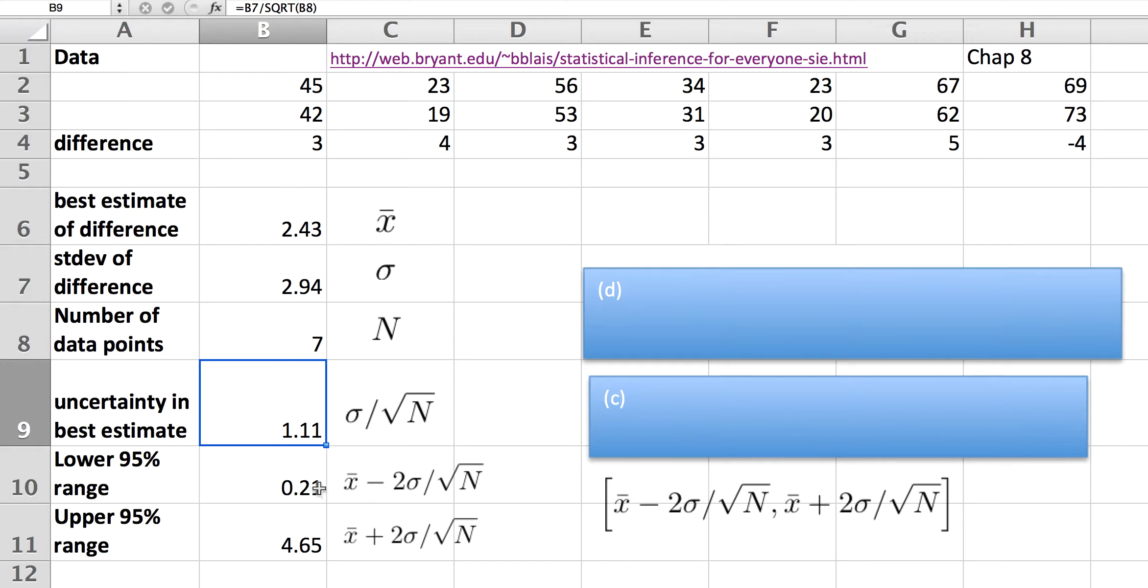Our best estimate plus twice that gives us our upper bound. And we're 95% sure, under the model that we have a single best estimate, that the best estimate falls within this range. So here we have the way that we might write it mathematically, but all I'm doing here is I'm just taking the best estimate minus twice standard deviation over the number of data points and the same thing for the plus. So we have the lower bound and the upper bound.